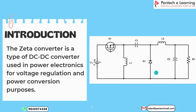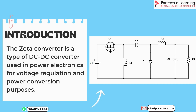Here the output voltage varies by varying the duty cycle using a microcontroller, which is designed to operate the Zeta Converter in either Buck mode or Boost mode. This Zeta Converter is a type of DC-to-DC Converter which is widely used in applications such as traction motors, power factor correction, battery charging, etc.